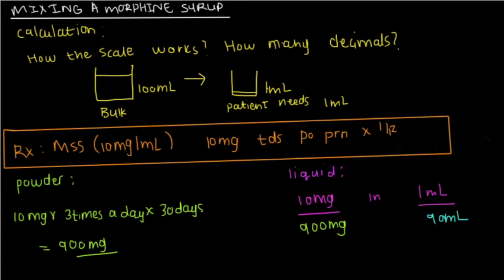Thus, in total, we're going to need 90 ml of liquid. Two-thirds of this liquid will be distilled water. Thus, 60 ml. And one-third is going to be syrup simplex. So, that's going to be 30 ml.